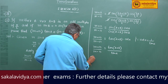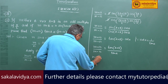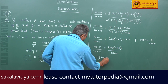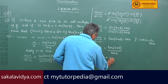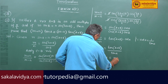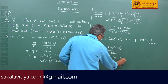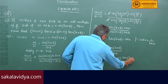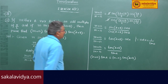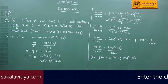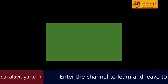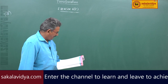Hence proved: (m+n)·tan(A) is equal to (m-n)·tan(A+B). Now moving to the 9th problem.